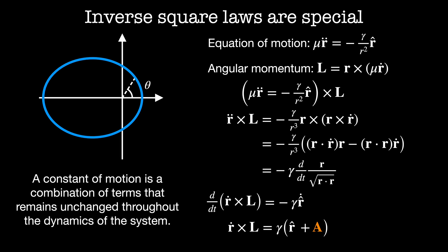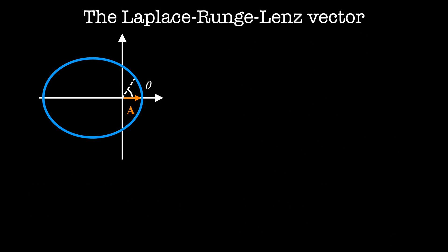Our constant of integration — which is a constant of the motion — A is equal to r dot cross L divided by gamma minus r-hat. This constant of the motion A, equal to r dot cross the angular momentum divided by the force constant gamma minus r-hat, is a vector that points in the direction of the perigee of the orbit. It turns out that this vector is called the Laplace-Runge-Lenz vector, often just called the Runge-Lenz vector. This is ironic because none of these three discovered it; in fact, it has been rediscovered many times throughout history. Since this vector is a constant of the motion, by definition A dot is equal to zero.